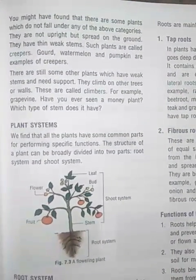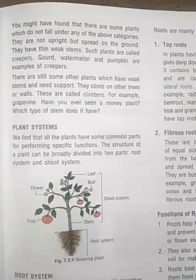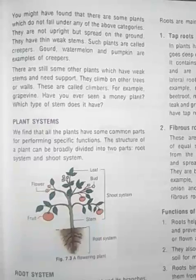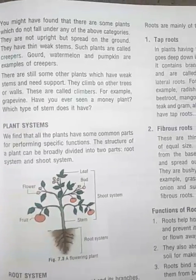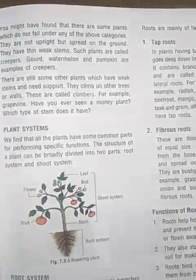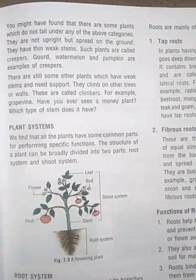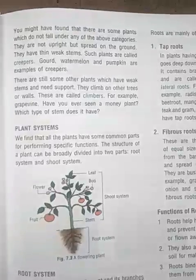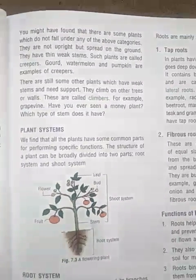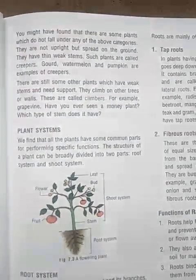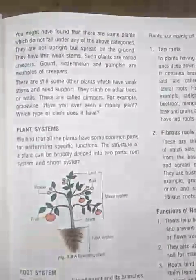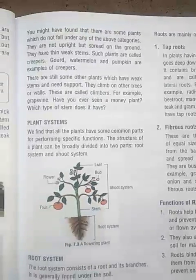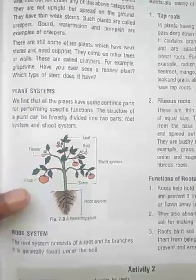Climbers are also known as supporting plants. They cling to trees or walls. Examples include grapevine and money plant. These plants are called climbers because they climb on walls or other stems. This is also known as climbing plants.